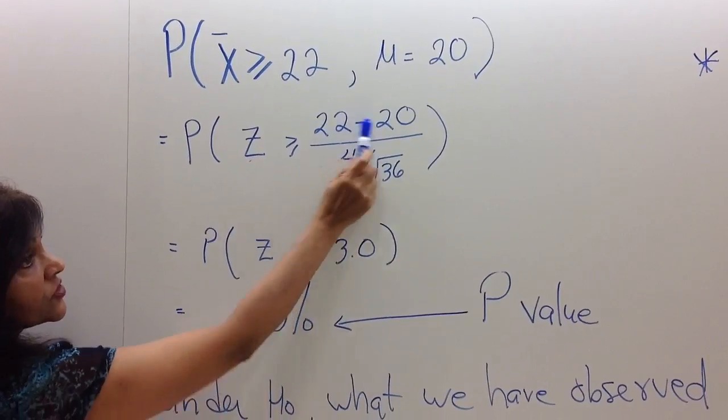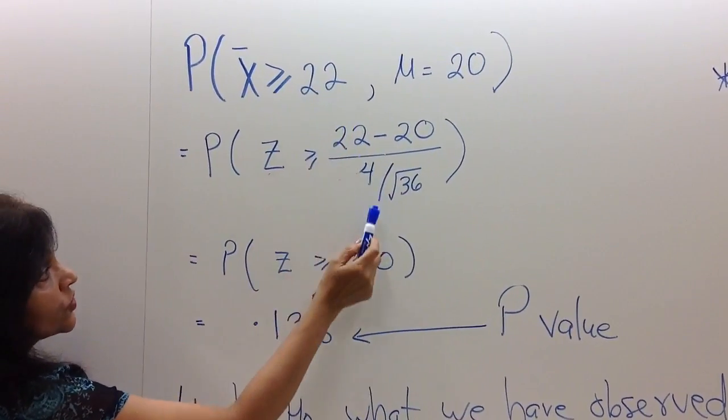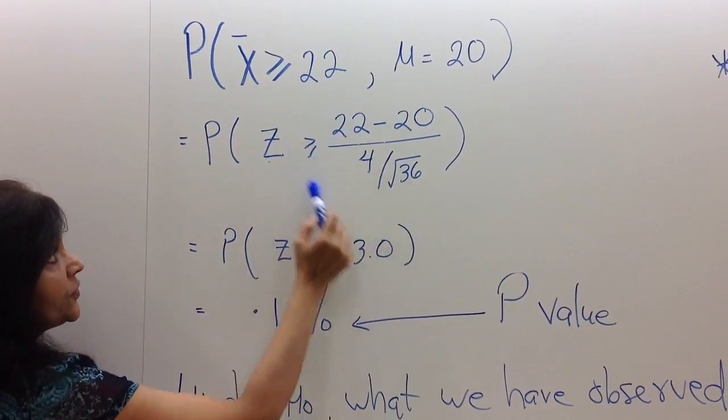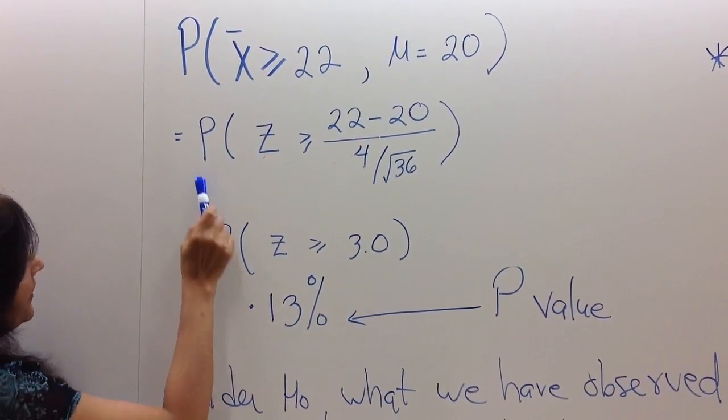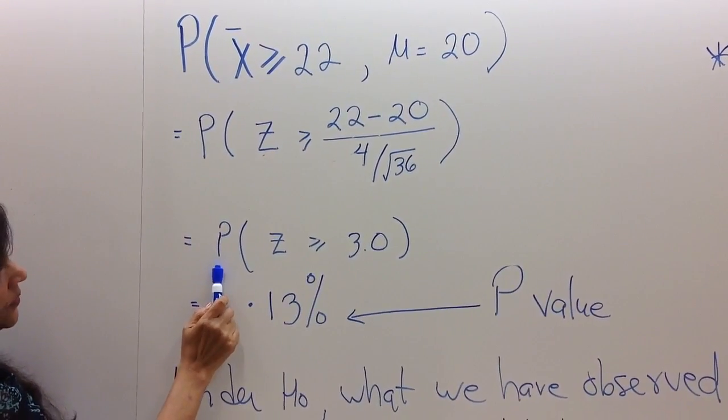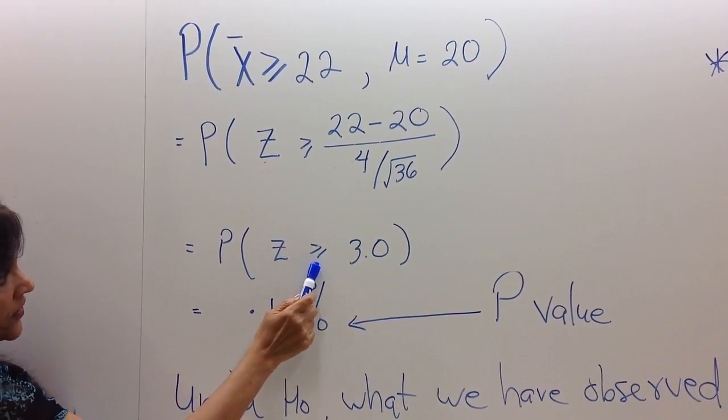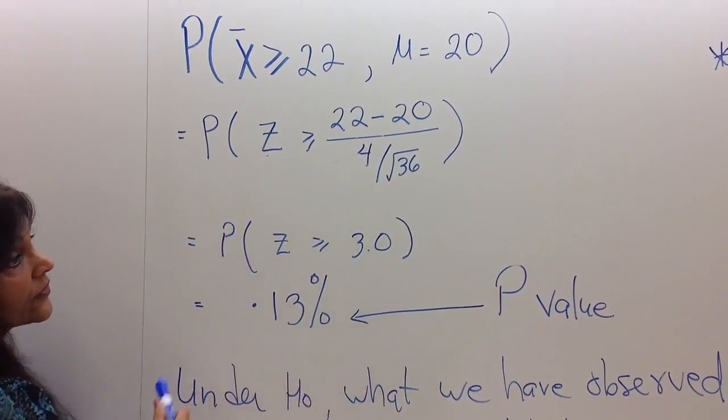So that's how we change this 22 to a z-score. And if you do this calculation, it turns out to be that we are calculating the probability that z is greater than or equal to 3.